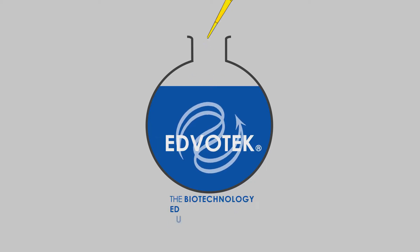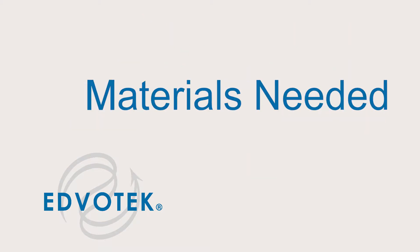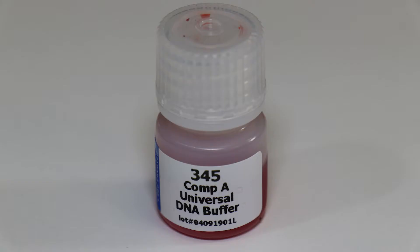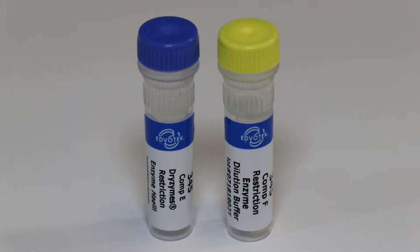Edvotech instructional videos presents pre-lab preparations for experiment 345: exploring the genetics of taste. Before beginning preparation you will need Component A universal DNA buffer, Components B, C, and D: TE buffer, lyophilized primer mix, and lyophilized control.